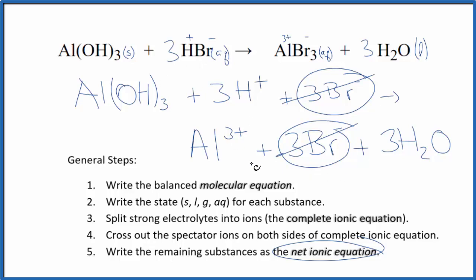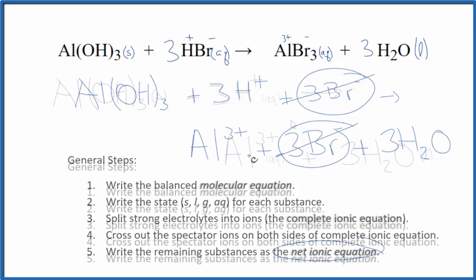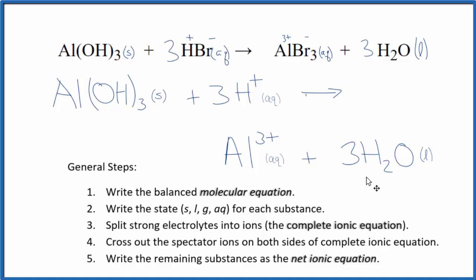Let me clean this up, write the states in, we'll have our net ionic equation. And this is the balanced net ionic equation for Al(OH)3 plus HBr, aluminum hydroxide plus hydrobromic acid.